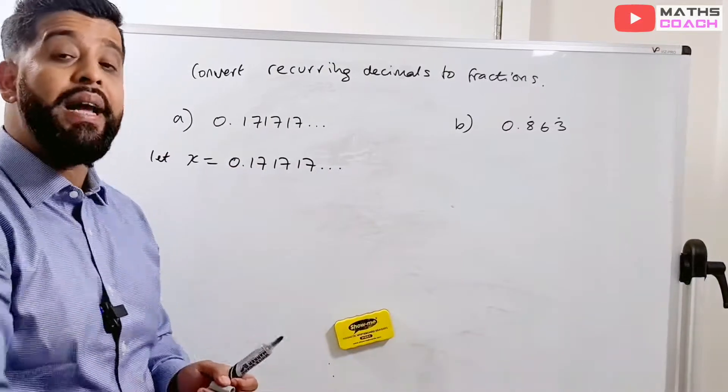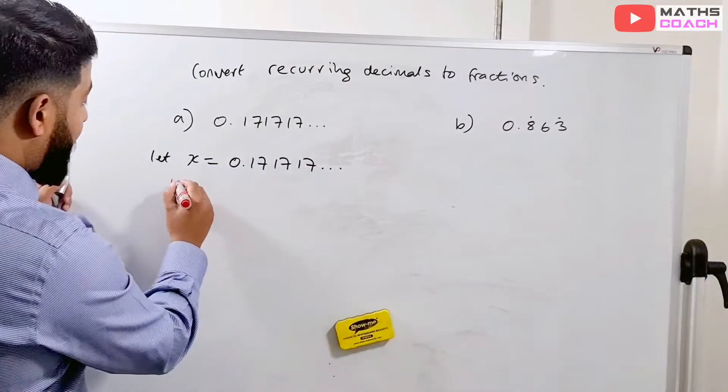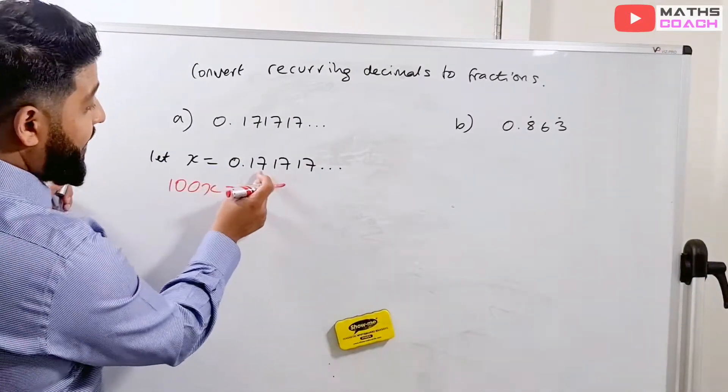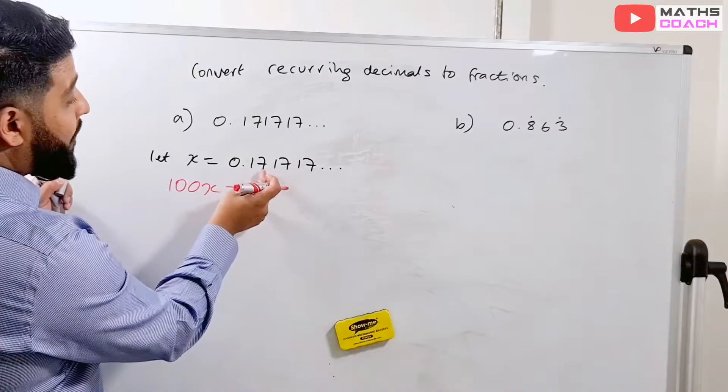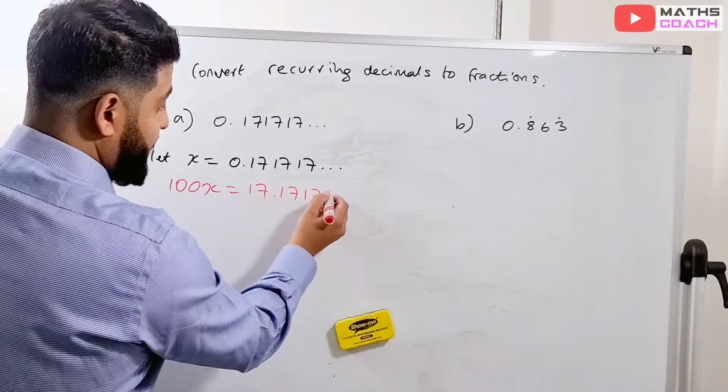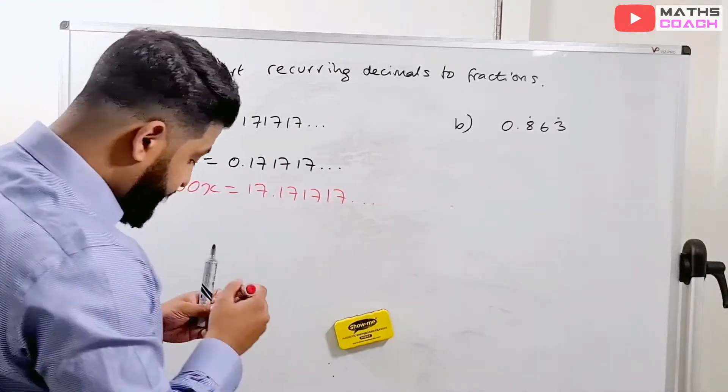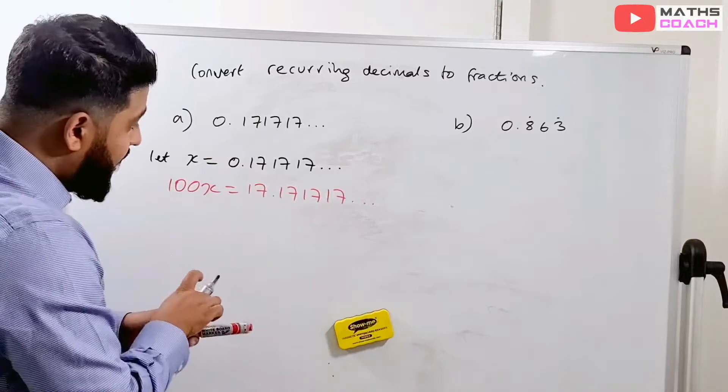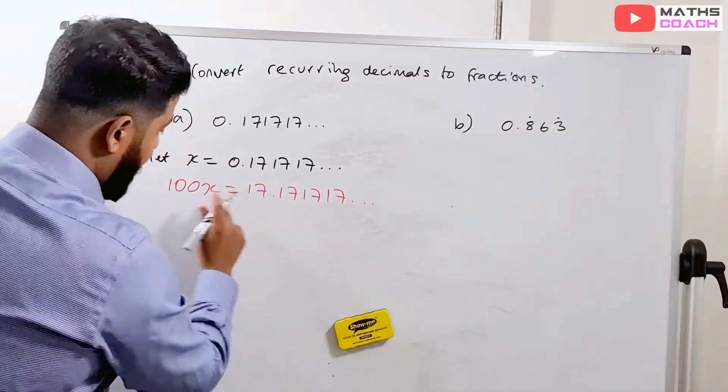However, if we multiply it by 100, so we end up with 100x equals, again, this time, the 1 and the 7 will go on to this side of the decimal place, giving us 17.171717.